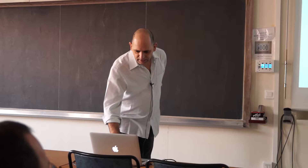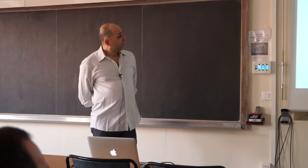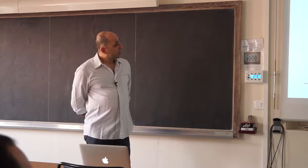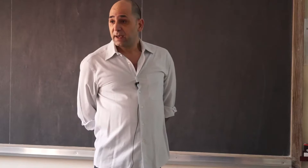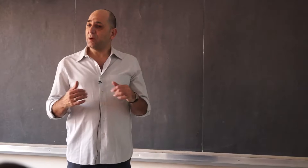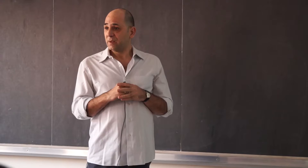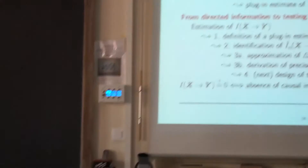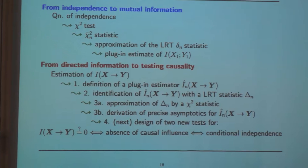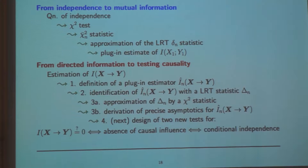So this is a summary of the path we just took. We wanted to test for independence, looked at the chi-square test, noticed we can think of it as a quadratic approximation to the likelihood ratio test statistic, and noticed that we can interpret that as the plug-in estimate of a mutual information. What I'd like to do is take the opposite path when dealing with directed information instead of mutual information: start by looking at the problem of estimating directed information, define the plug-in estimator, identify it with a test statistic in a more complex hypothesis test, prove results about its asymptotics, and then design some hypothesis tests.